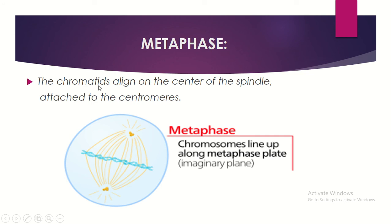In metaphase, the chromatids align at the centre of the spindle, attached to the centromere. At this stage they are called chromatids because the 92 chromatids are joined together and aligned at the centre of the mitotic spindle.